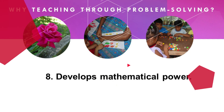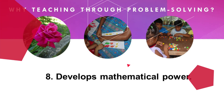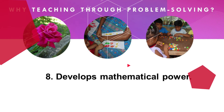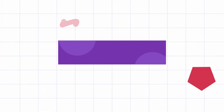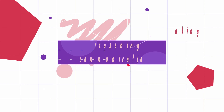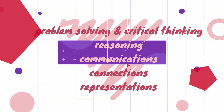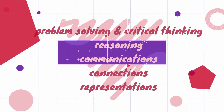Number eight, TTP develops mathematical power. Students solving problems in class will be engaged in all five of the processes of doing mathematics, which are problem-solving and critical thinking, reasoning, communications, connections, and representations.